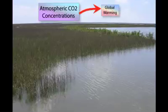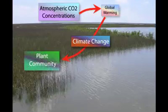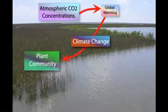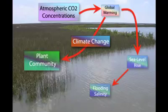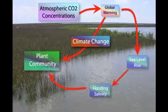CO2, being a greenhouse gas, will contribute to global warming and changes in climate, which will affect plant communities. Rising global temperature also contributes to sea level rise, which will alter flooding and salinity regimes, affecting wetland plant growth and distribution.